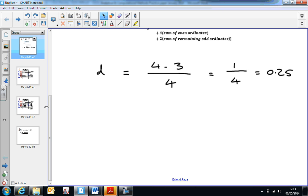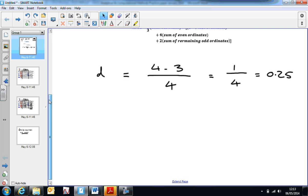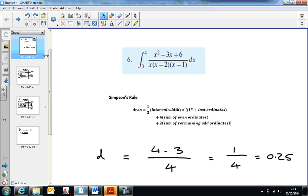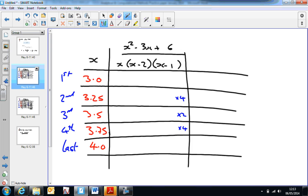So I'm going to start at 3, which is the bottom limit here, and work my way up to 4 in intervals of 0.25, and lay it out in a table. So if we look at this, this is the sort of table that I would recommend that you use.